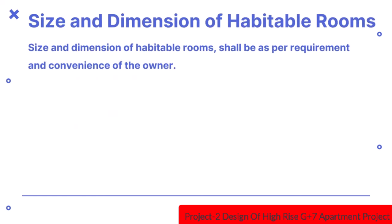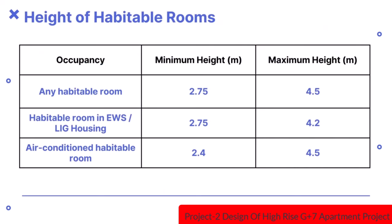The size and dimension of habitable rooms shall be as per requirement and convenience of the owner. Any habitable room should have a minimum height of 2.75m and maximum 4.5m. Air-conditioned habitable rooms can have a minimum height of 2.4m and maximum 4.5m.